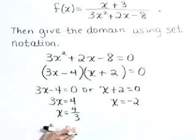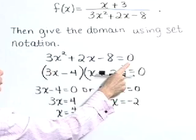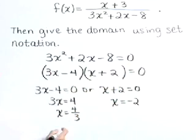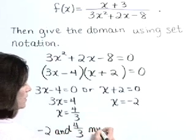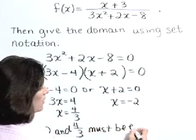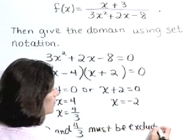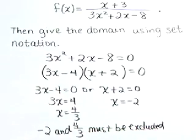These are the x values that cause the denominator to be 0. Therefore, negative 2 and 4 thirds must be excluded from the domain.